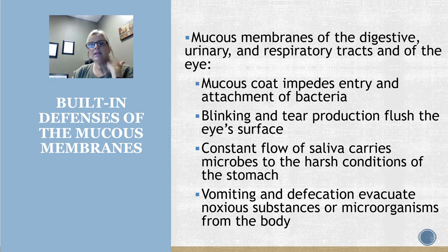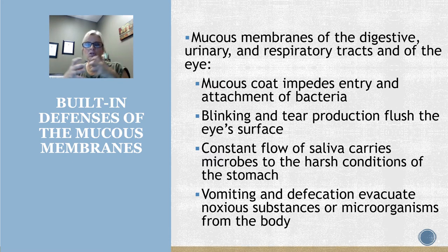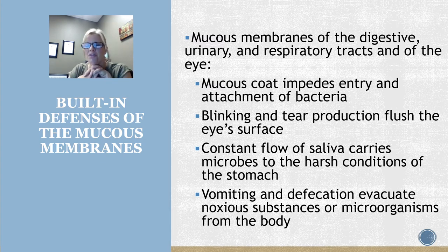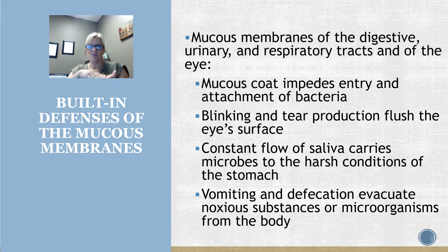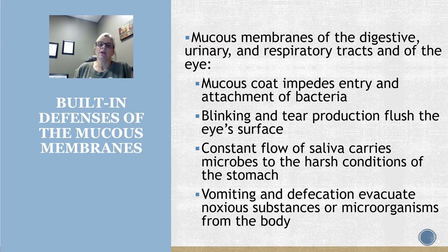Mucous membranes line anywhere that opens to the outside — our respiratory system, vaginal opening, anal opening, and we include digestive, urinary, respiratory, and even the eye. Mucus is very thick and sticky, so it traps bacteria and keeps them from attaching. We also have cilia in our respiratory passages that actually sweep and move that mucus out, providing mechanical removal. Blinking and tear production also flush things out of the eye.